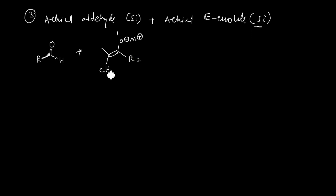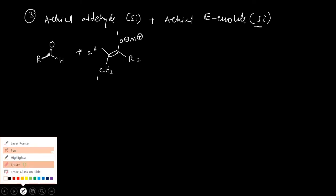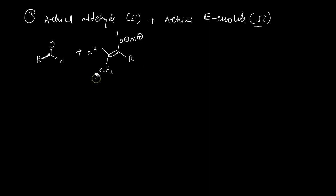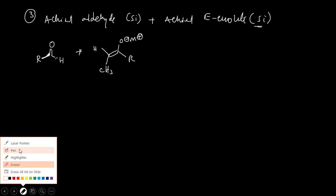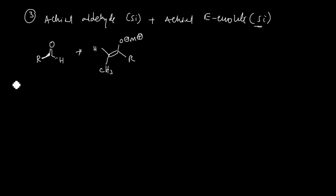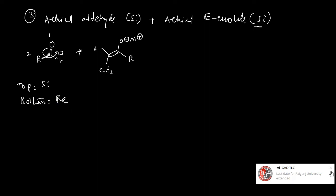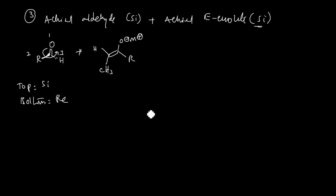This is E-enolate, confirmed by the 1,2 geometry. Now let us consider the faces of this aldehyde and enolate substrates. In the aldehyde, the top face — looking at priorities 1, 2, 3 — is the Re-face. In the enolate, the top face, going in clockwise direction 1, 2, 3, is also the Re-face, and the bottom face is the Si-face.